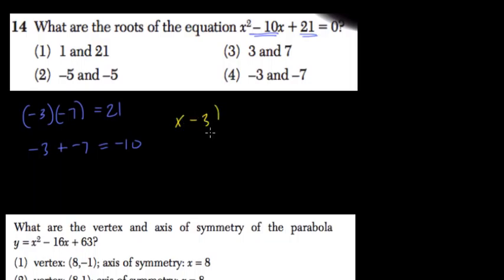we would get x minus 3, or x plus negative 3, times x plus negative 7, or x minus 7. And what factored form allows you to do is to realize that you're multiplying two numbers that equals 0. One or the other has to be 0.